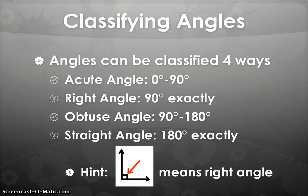Now to classify angles, they can be done in four different ways. There's the acute angle, the right angle, the obtuse angle, and the straight angle.